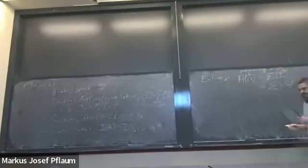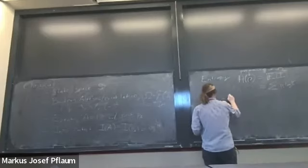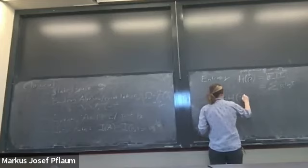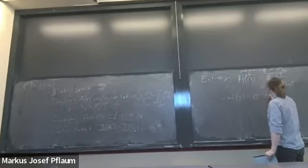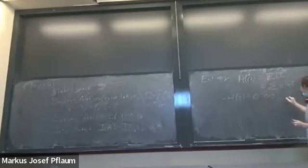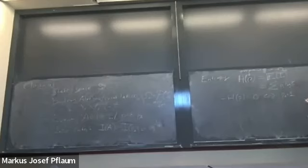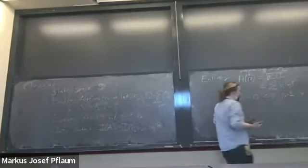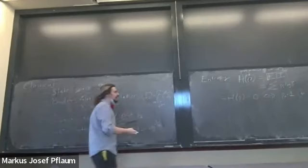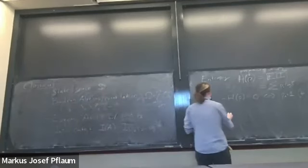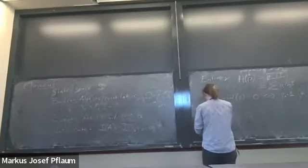That's our classical version of entropy, and it has some nice properties. For instance, the entropy of something is zero if and only if there is some event that has probability one. Any event that's a sure thing contains zero information because no one is surprised whatsoever, and it takes nothing to communicate that event happened beyond just knowing what the event would be.